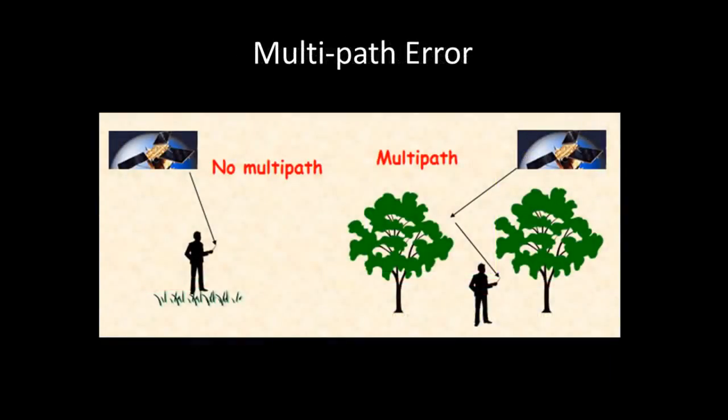A multipath error is the idea that the GPS signal is reflected off objects before reaching the receiver. Thus again, modifying the time the signal takes to travel from the satellite to the receiver.